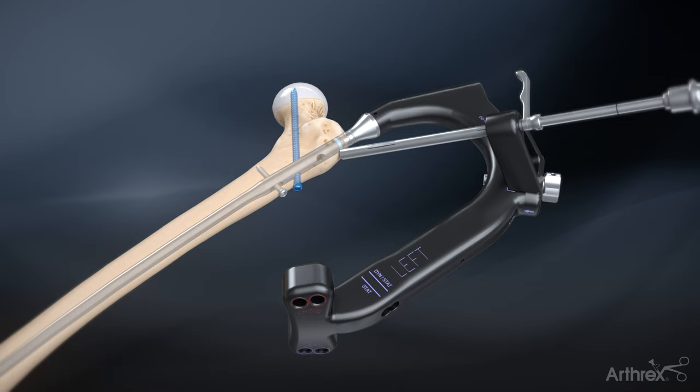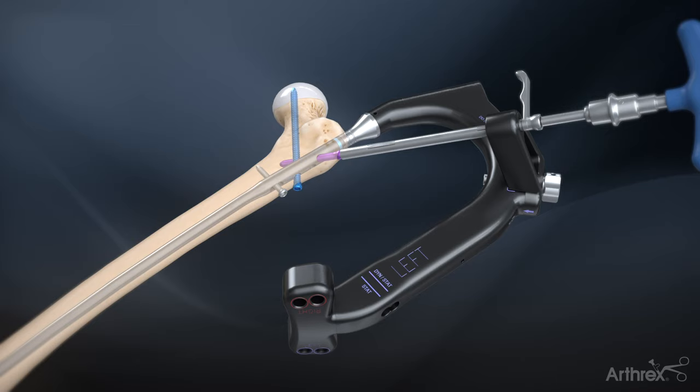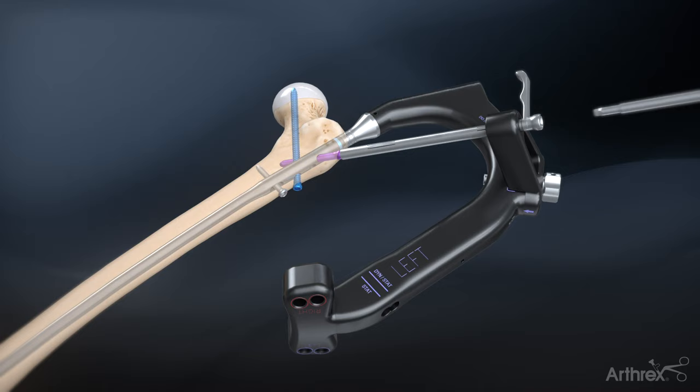Insert the 6.5 mm fully threaded cortical locking screw assembled with the captured hex driver through the screw sleeve until the laser mark is flush with the end of the sleeve. Remove the screw sleeve.